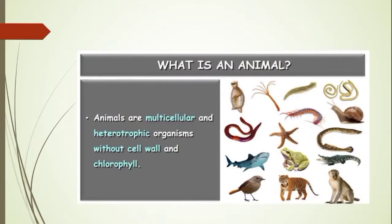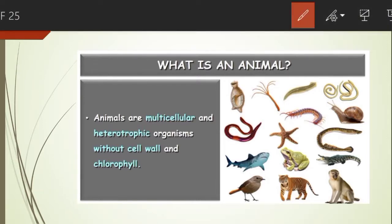What is an animal? Animals are multicellular — multicellular means they are made up of many cells — and heterotrophic organisms, meaning they cannot prepare their own food. They are dependent on other organisms, either plants or animals, for their food. Their cells do not have a cell wall and they do not have chlorophyll pigment. Chlorophyll is the green color pigment, and as they lack it, they are heterotrophic.